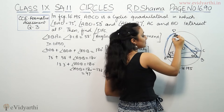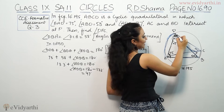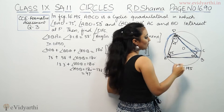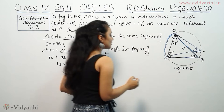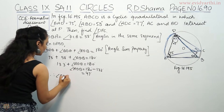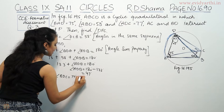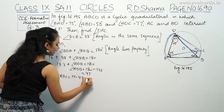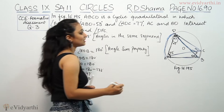Now we have angle ADC as 77 degrees. The remaining part, angle BDC, will be equal to 77 minus 47, which means angle BDC equals 30 degrees.